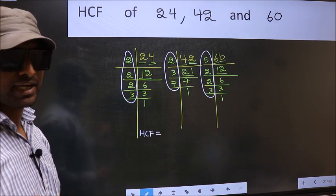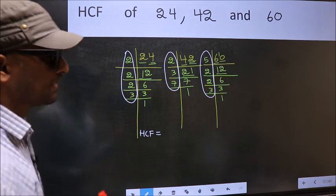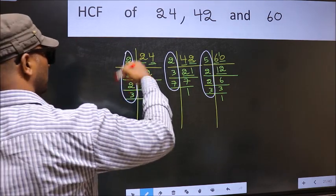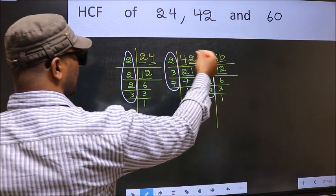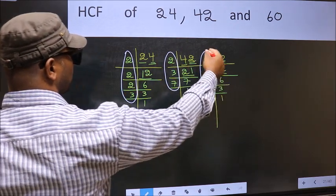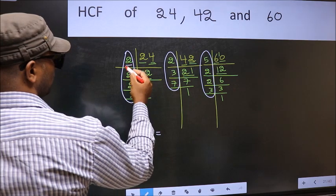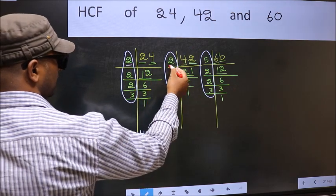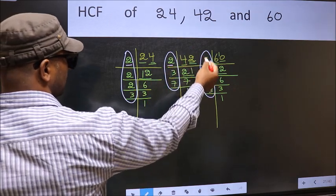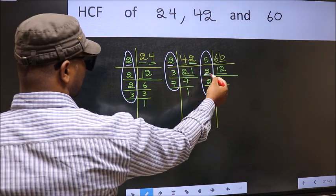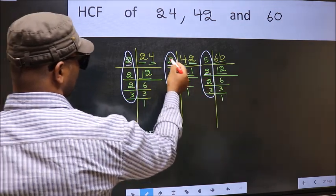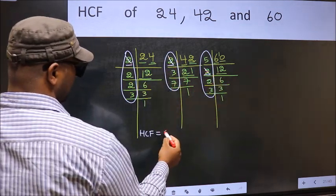So now let us find the numbers which should be present here, here, and also here. Starting with the number 2: Do we have 2 here? Yes. Go to the next place. Do we have 2 here? Yes. So we have 2 here.